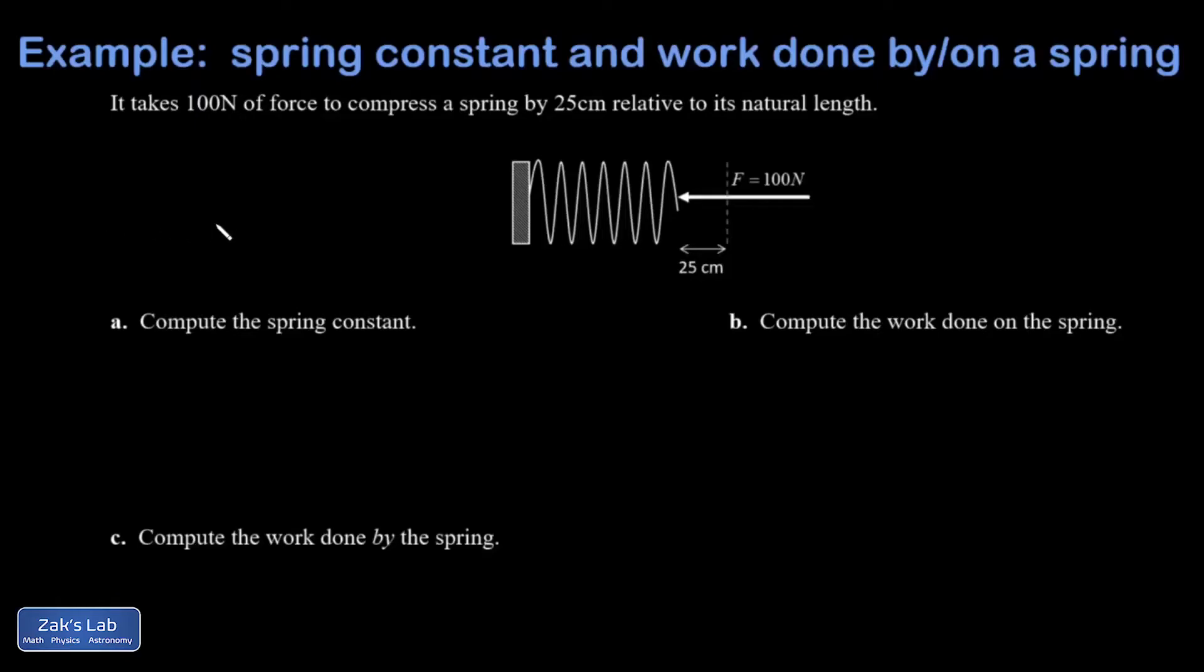In this example, we're trying to get the work done on a spring and the work done by the spring. What we're given is how much force it took—100 newtons—to compress it 25 centimeters from the equilibrium position.